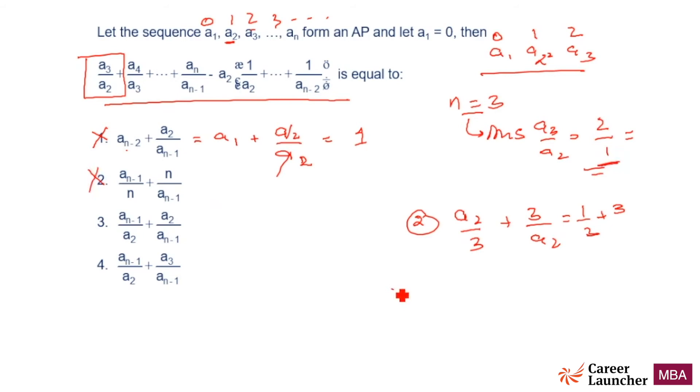Choice 3? An-1 is A2, A2 upon A2 plus A2 upon An-1 is A2, because N is 3, which is equal to 2. A2 by A2 is 1, A2 by A2 is 1, so satisfies. This can be the answer, retain it. Check for choice 4.